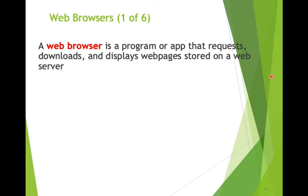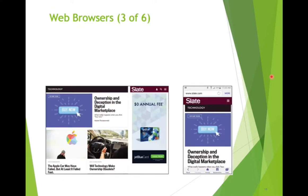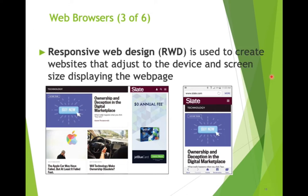A web browser is a program or app that downloads and displays web pages from a web server. It reads HTML5 — hypertext markup language, fifth edition — and translates tagged data into a visual presentation. We know Google Chrome, Microsoft Edge, and Firefox. A really important concept we'll focus on in this class is RWD, responsive web design, used to create websites that adjust to screen size.